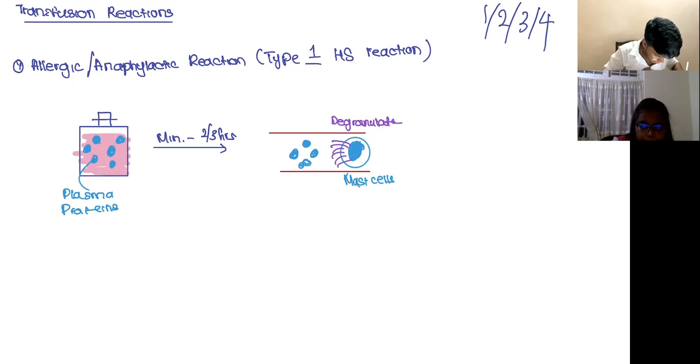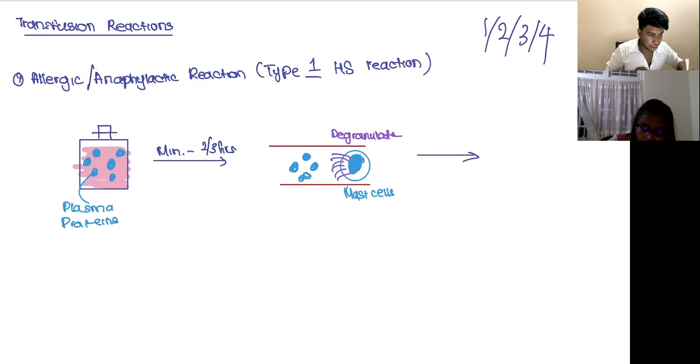This is usually seen in a patient who has got repeat transfusions. So if you remember what hypersensitivity reaction type one is, you need to be exposed to it first. And then the body produces all these antibodies against the product. So the next time the blood comes in, it'll degranulate.